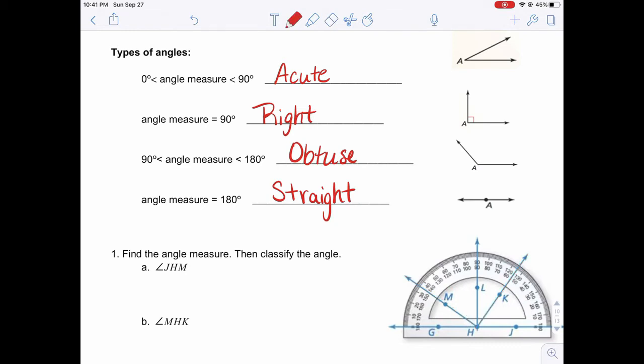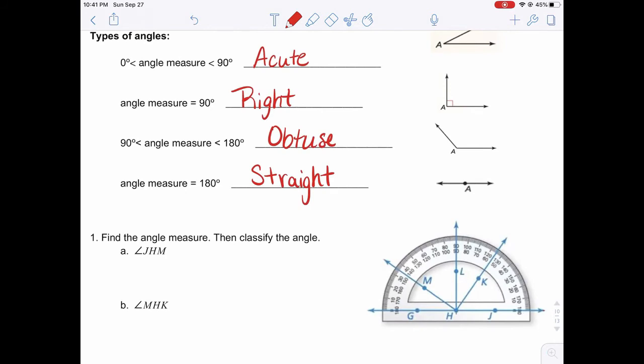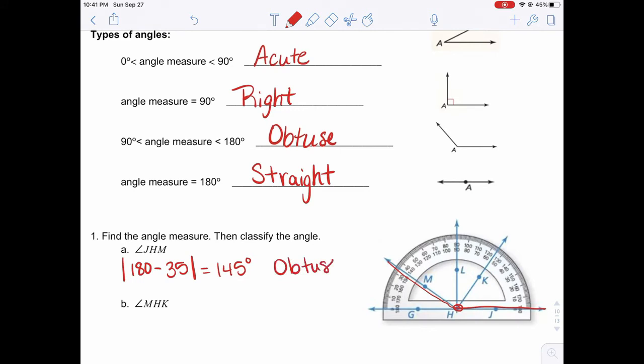So here we're going to practice finding angle measures and then classifying the angles. The first example we have here, we'll do together. We're looking for the measure of angle JHM. I'm going to trace that in another color so it's a little easier to find: J to our vertex H to M. So using my definition of measure, I find the real numbers that they're mapped to on the protractor. If I start with J, I can say the absolute value of 180 minus the number attached to M, which is 35, and that difference is 145 degrees. So the measure of angle JHM is 145 degrees. This is a measure between 90 and 180, so we can call this angle obtuse.